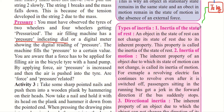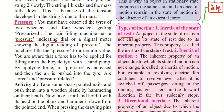The first type is inertia of state of rest. An object in the state of rest cannot change its state of rest due to its inherent property — this property is called the inertia of state of rest. For example, once you keep an object on the table, it will not move until an external force is applied to cause it to move.